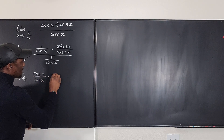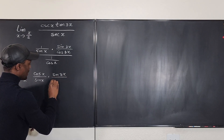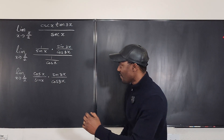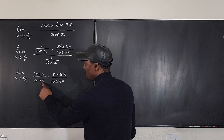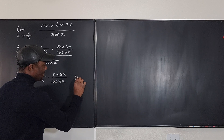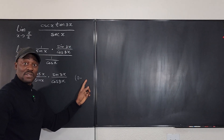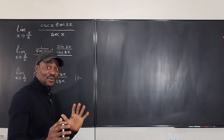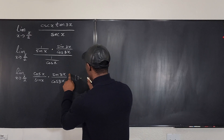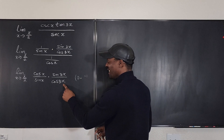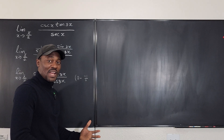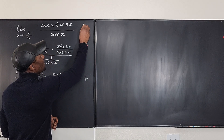Let's plug in π/2 now. Cosine(π/2) is 0 and sine(π/2) is 1, so the first fraction gives 0 over 1 = 0. For the second part: sine(3π/2) is −1 and cosine(3π/2) is 0, giving −1 over 0, which is negative infinity. So we have 0 times infinity — another indeterminate form.